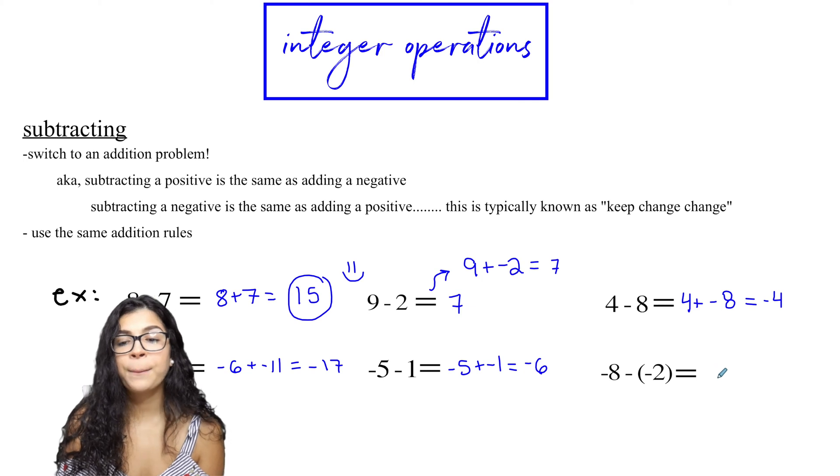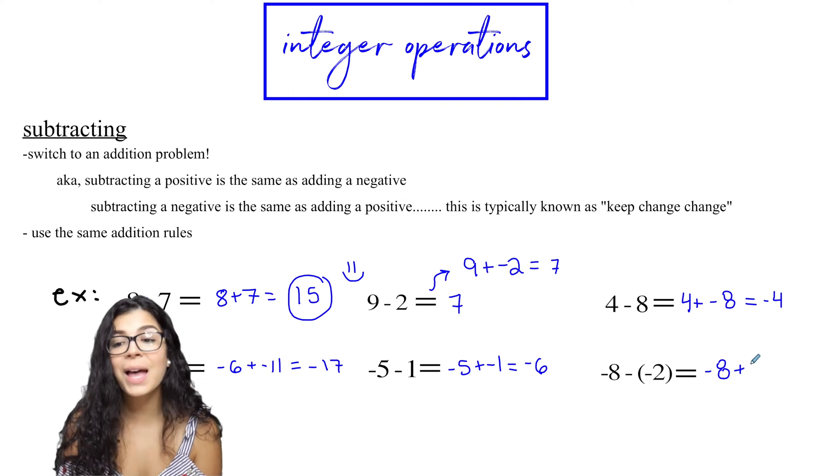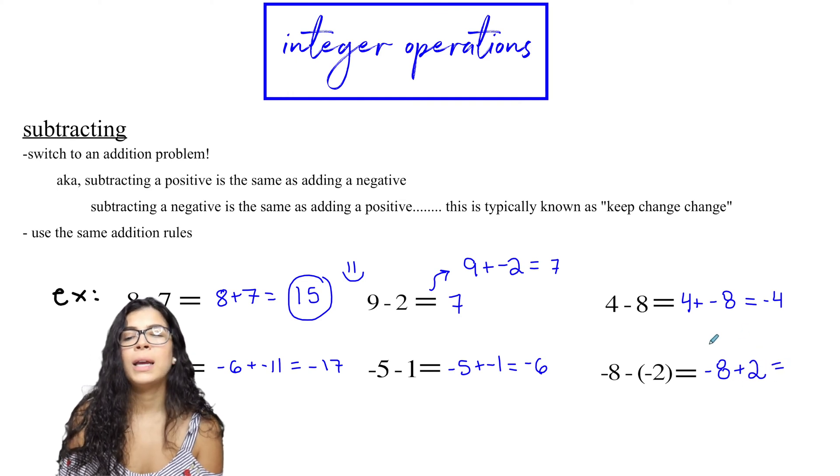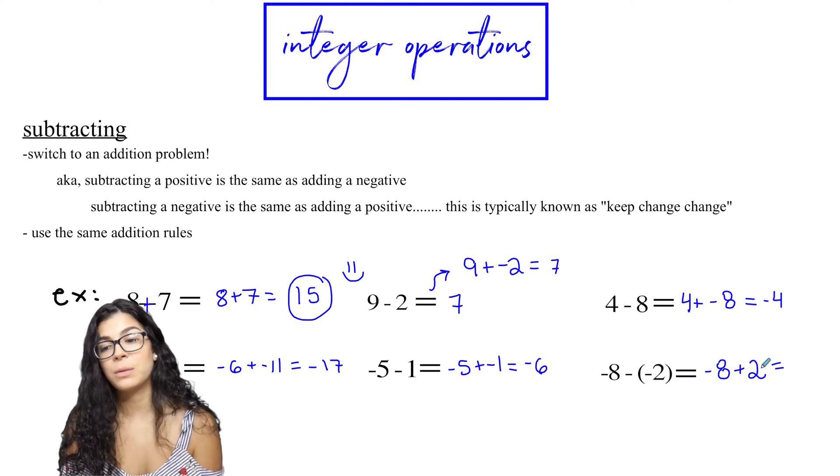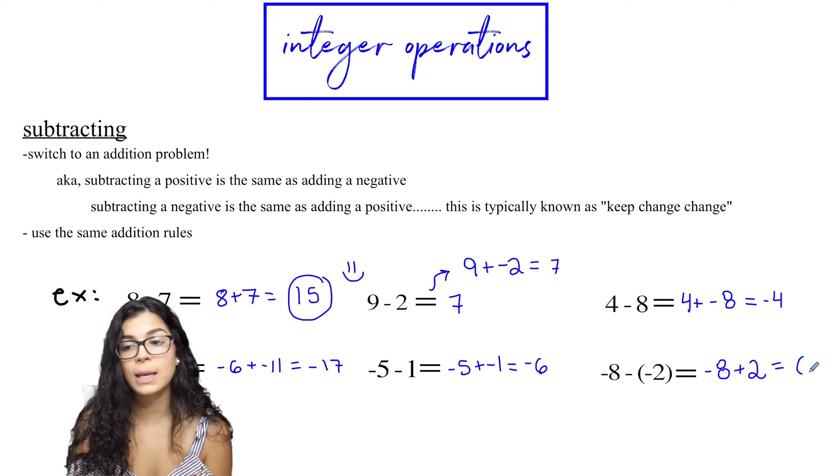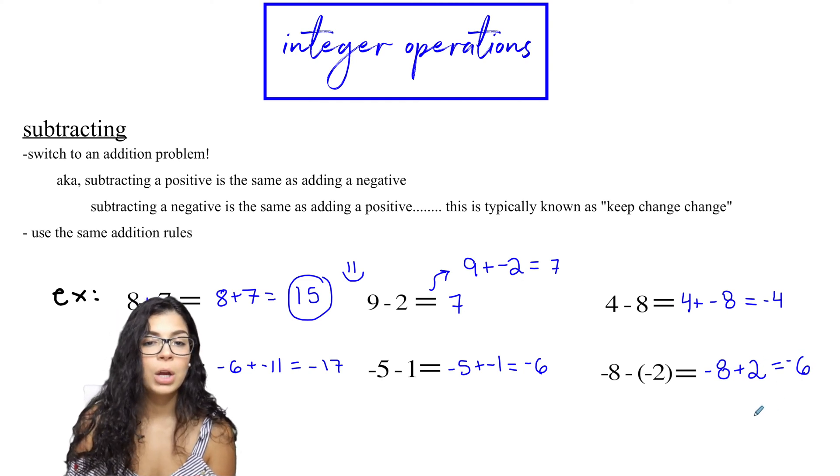Okay. Last one. Negative eight minus negative two. This is negative eight plus positive two. So eight and two different signs. The negative eight and the two have different signs. So I'm going to subtract. It is six. And then I'm going to take the sign of the higher number. So that's negative six. Okie dokie.